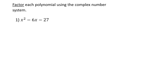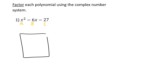This is a study guide for test three. It says to factor each polynomial using the complex number system — this is just a fancy way of saying factor completely. The factor method I like to use is the box method. We have three terms, a trinomial, which means I'm going to use the box. This is going to be my A, my B, and my C.